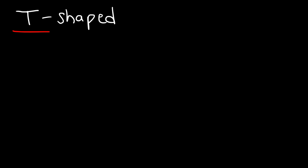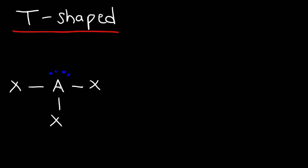The next structure actually has a T-shaped geometry. One way to draw it is with the center atom and three other atoms attached to it, along with two lone pairs on the center atom. You can orient the molecule different ways, but one orientation looks more like a T-shape.